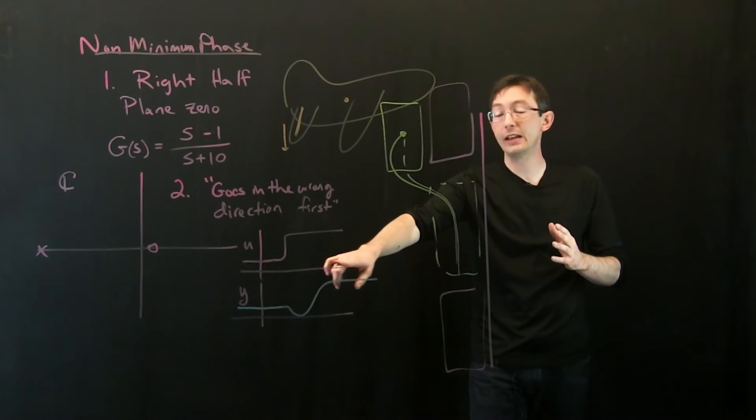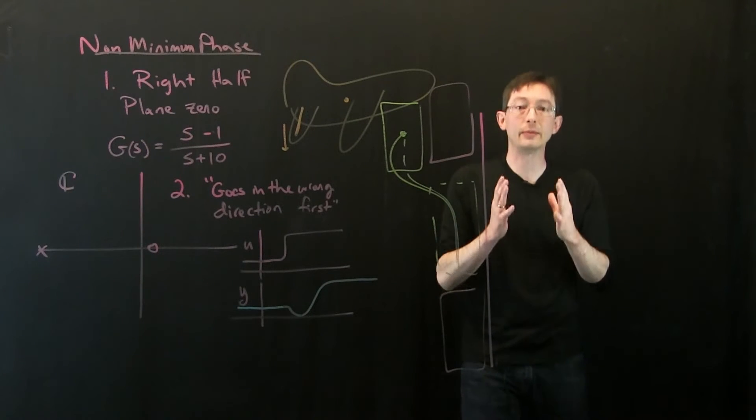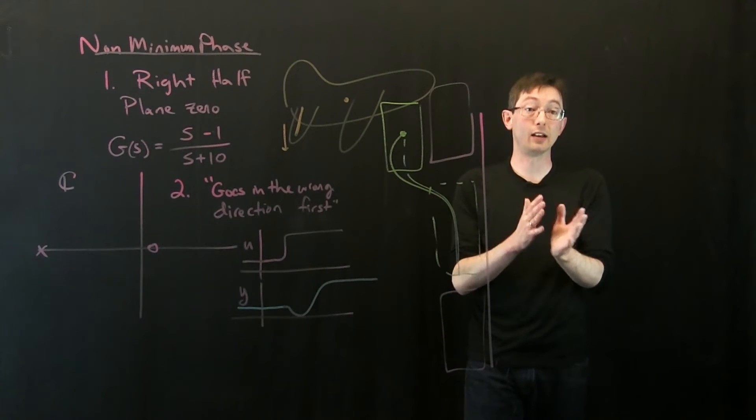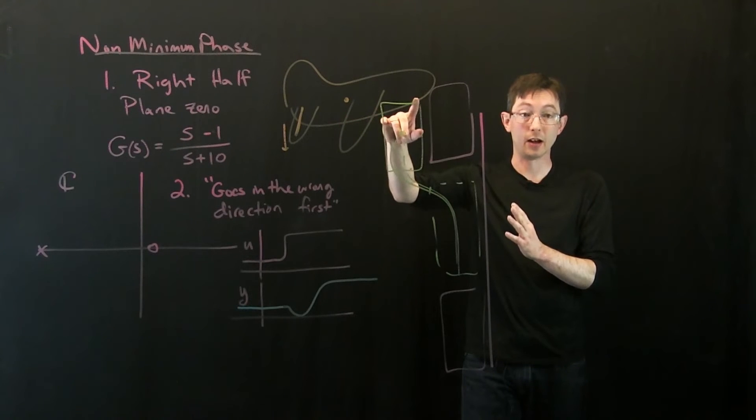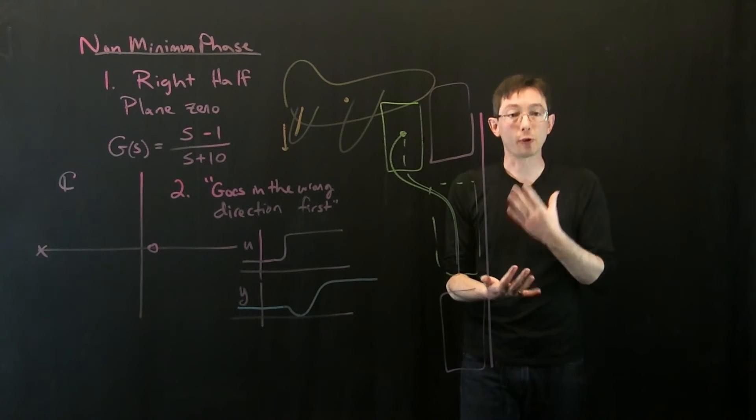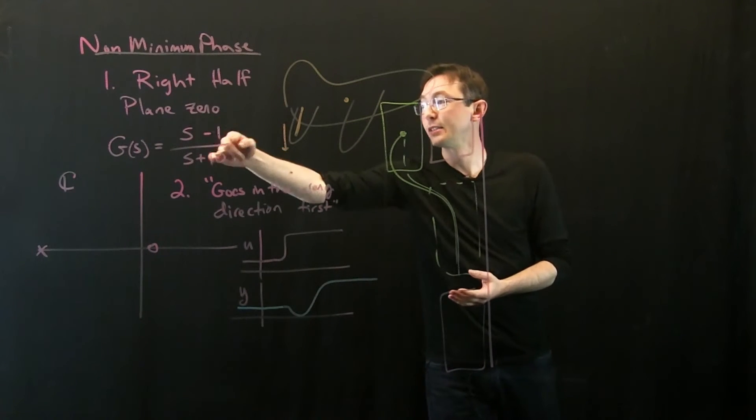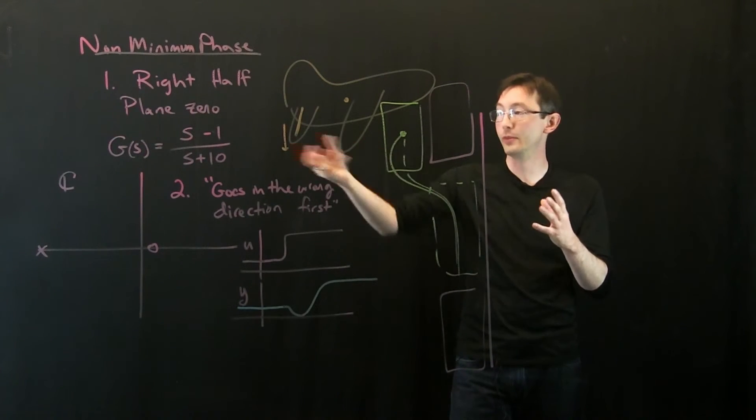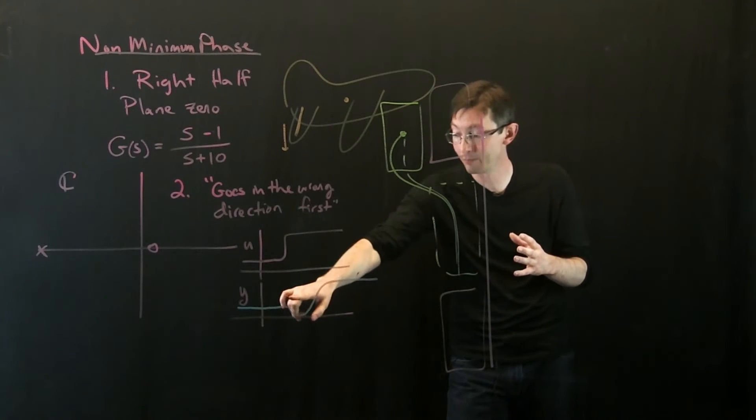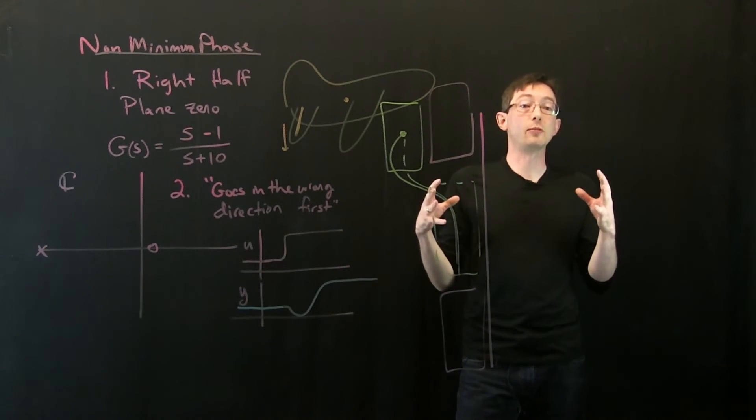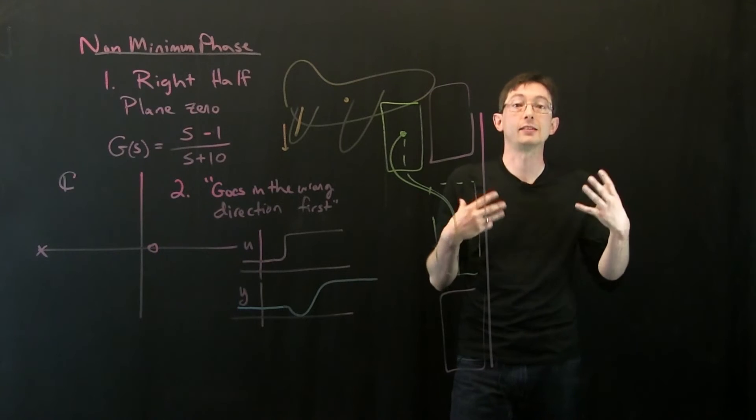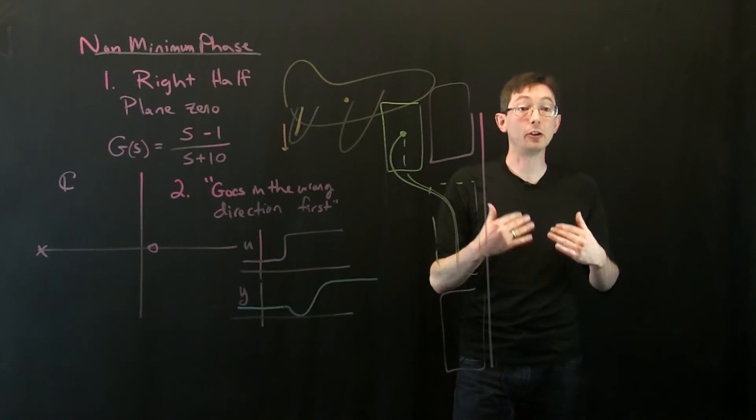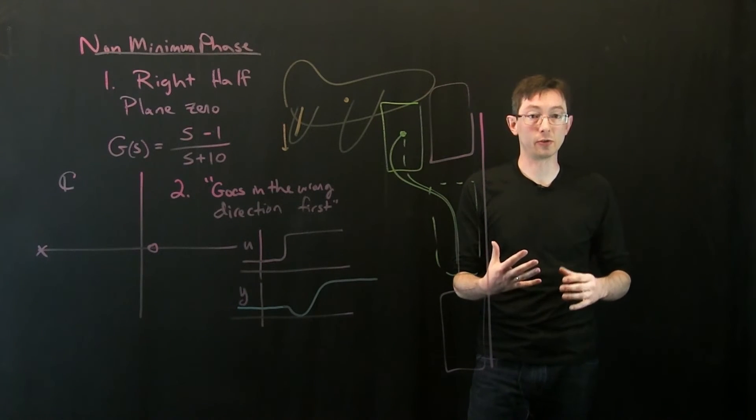These non-minimum phase systems, these little dips in the wrong direction give me fundamental limitations on how fast of a maneuver I can track in a non-minimum phase problem. So there's robustness limits given by these right half plane zeros. Okay? So the worse my, you know, my non-minimum phase system is, the bigger this dip, the less robust I am to fast changes and I have to settle for slower, more gradual control.